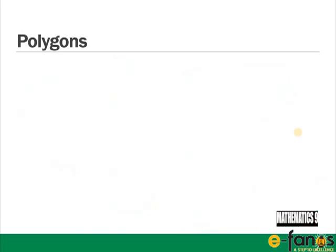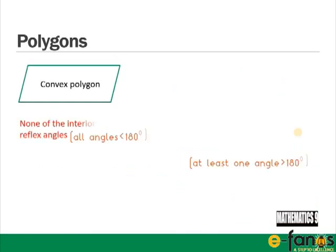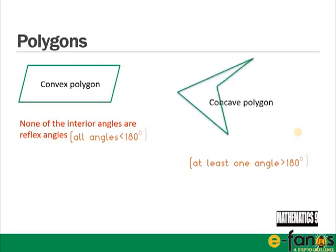A convex polygon has none of the interior angles as reflex angles — they're either acute or obtuse. A concave polygon has at least one angle that is a reflex angle.